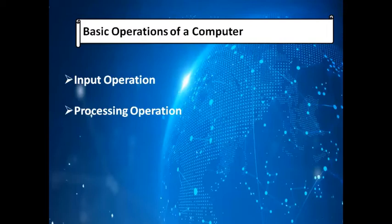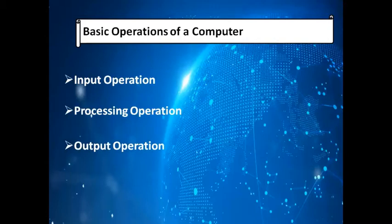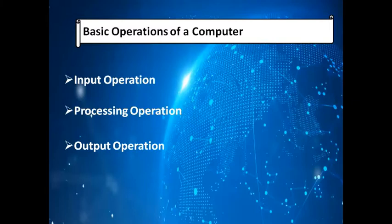Output operation means sending results to an output device. After processing, the results are ready. The monitor is a soft copy output device which displays results on screen, and the printer is a hard copy output device which prints results in physical form that you can touch — in other words, you can take a printout.